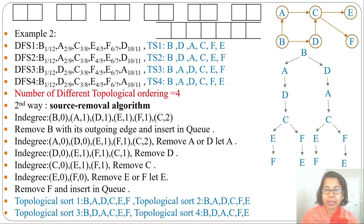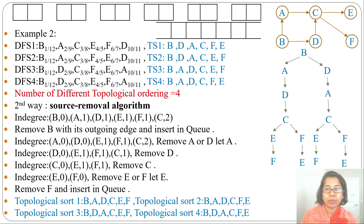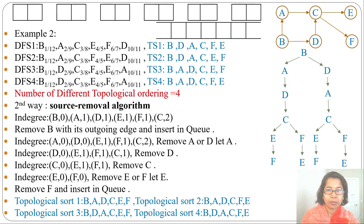With this I am finishing topological sort. I discussed the DFS-based algorithm and source removal algorithm with two examples using both algorithms. If this lecture is helpful for you, please like and subscribe. Thank you.